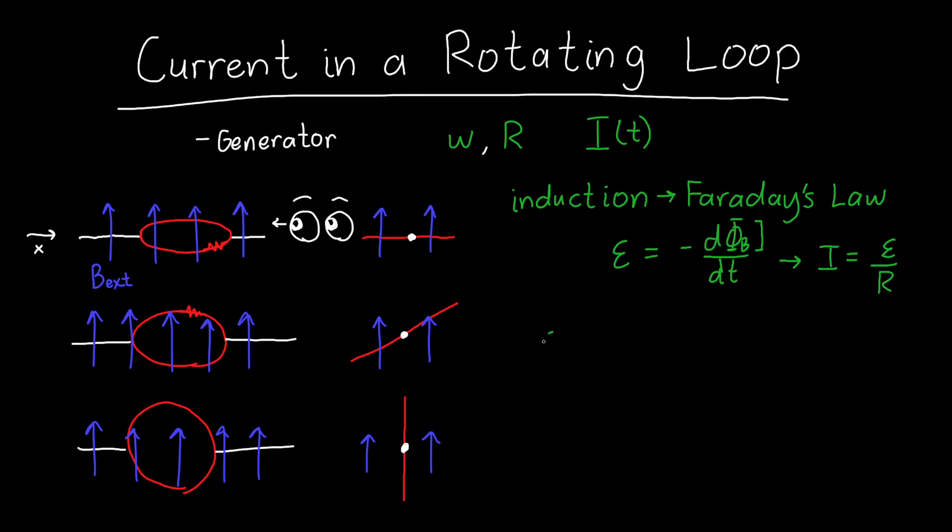So to calculate the magnetic flux phi_b, what we need to do is integrate the dot product of the B field and the area vector dA. And we need to integrate this over the area of our loop.